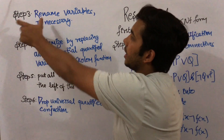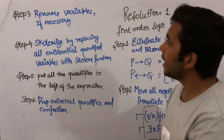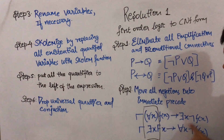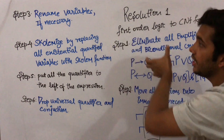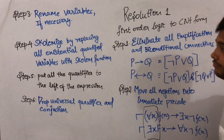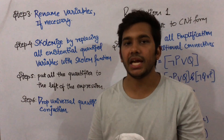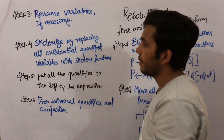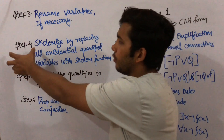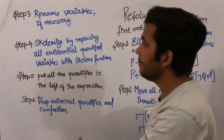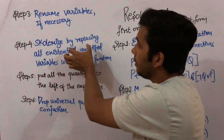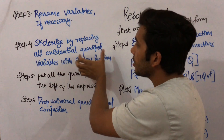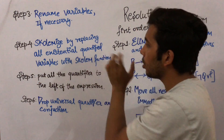Now coming to the third step: rename variables if necessary. Suppose you are solving any given clause and there is a requirement of renaming a variable, you can do it in this step. Now coming to the fourth step, which is the main step — Skolemization — by replacing all existential quantified variables with a Skolem function.